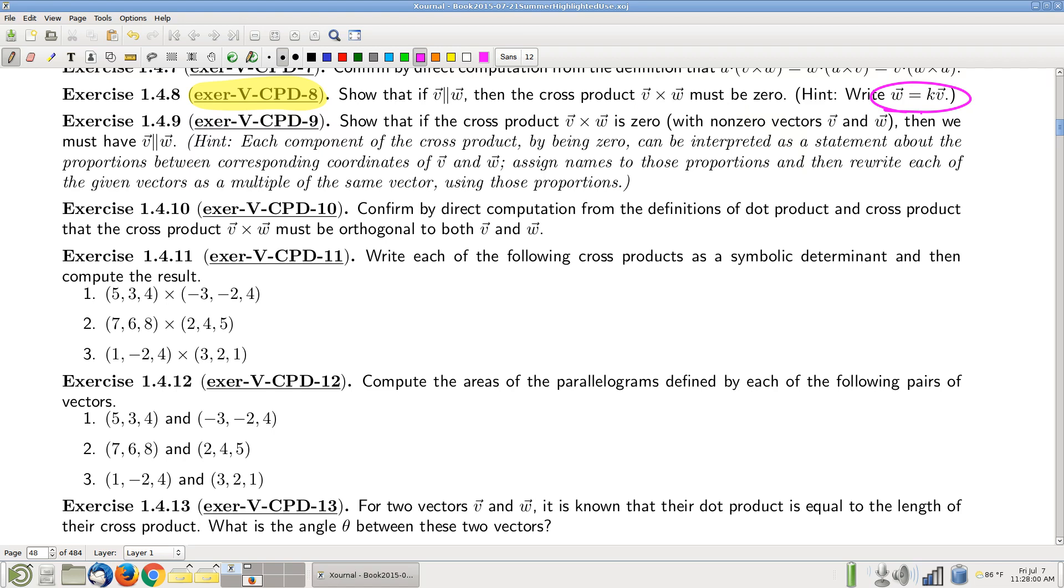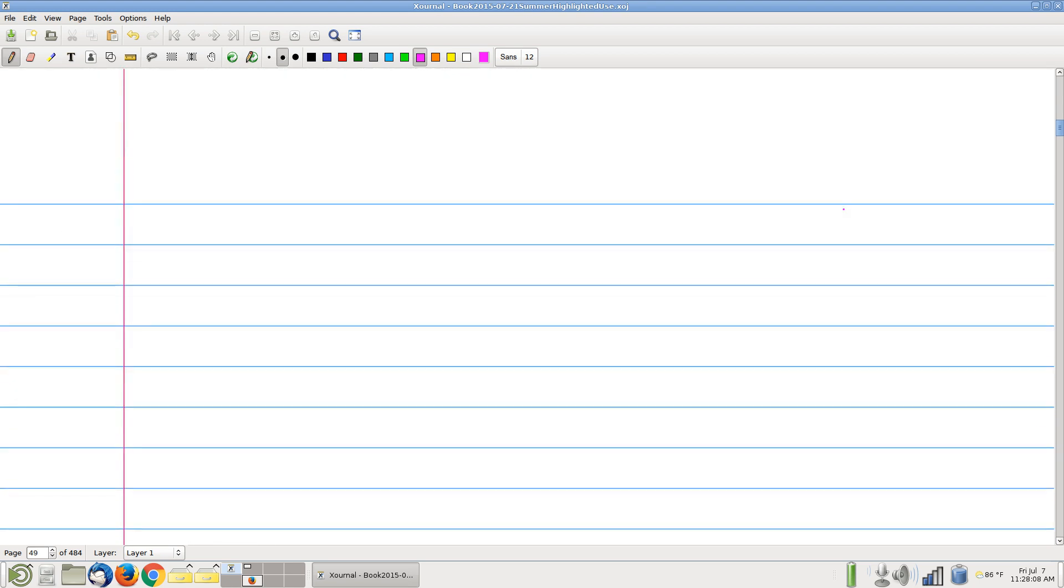So let's write that down and compute the cross product. This is going to be a plug-and-chug, as it turns out. W equals KV, so that means W1, W2, W3 is equal to KV1, KV2, KV3.